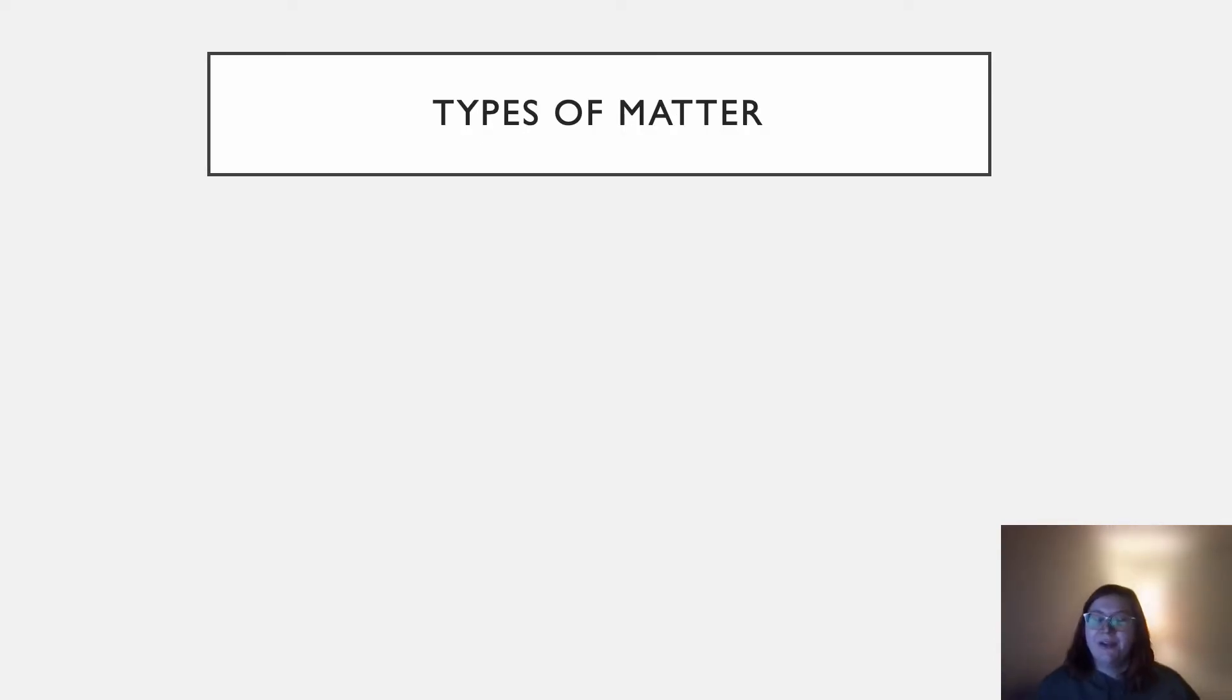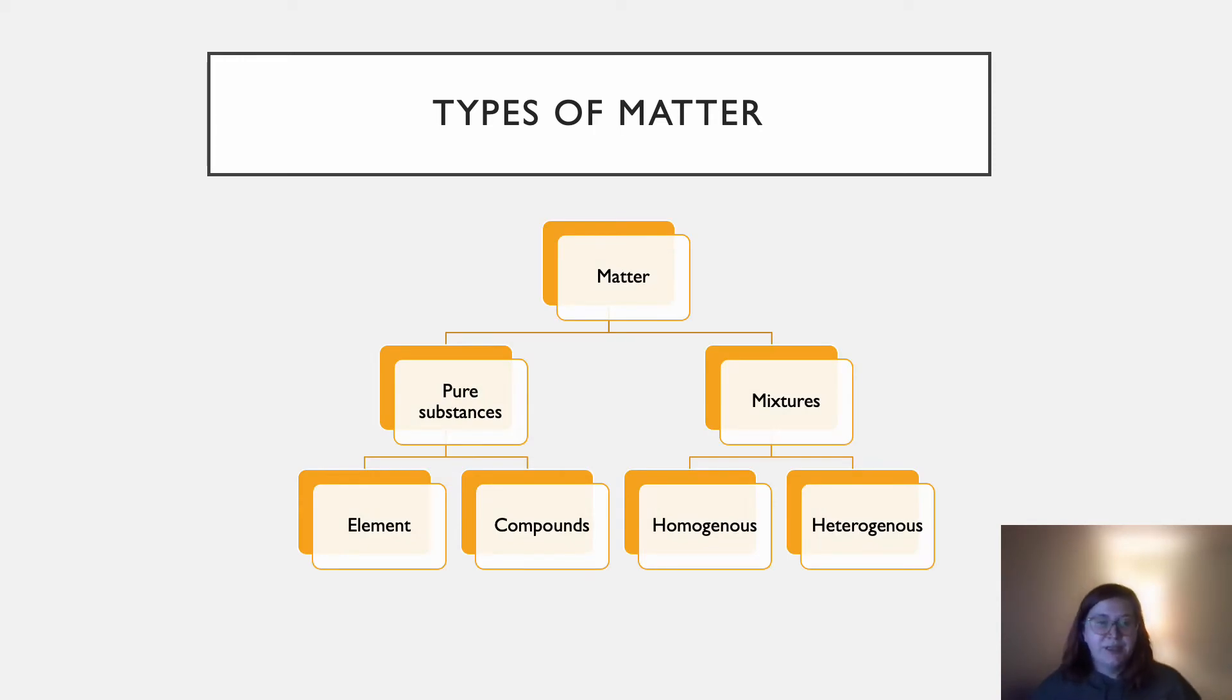And we can split matter into different types. So matter can be split into two big categories, pure substances and mixtures, and then each of those can be split as well into two more.